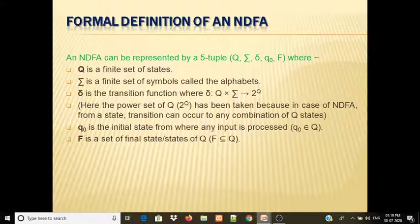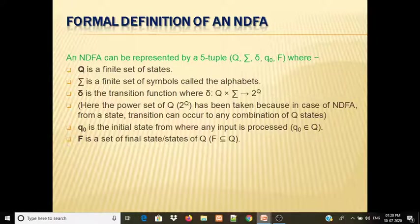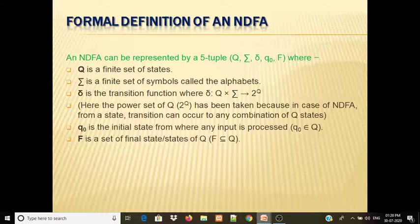We can see the formal definition. An NDFA can be represented by 5-tuples, just as we have seen in Deterministic Finite Automata. The 5-tuple consists of Q, sigma, del, q0, and F. Where Q is a finite set of states, and sigma is a finite set of symbols called the alphabet, denoted by sigma.